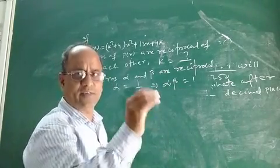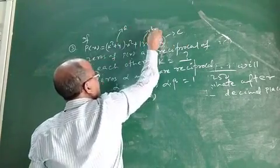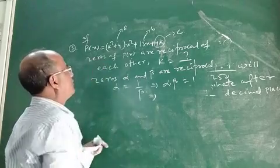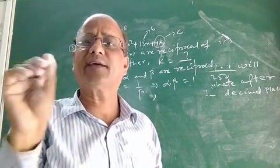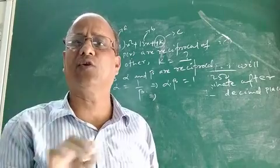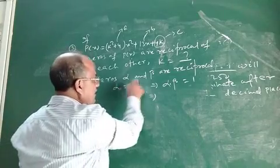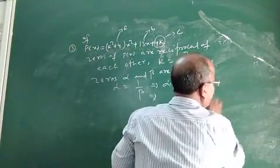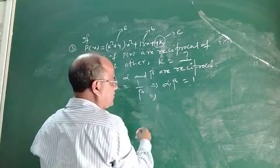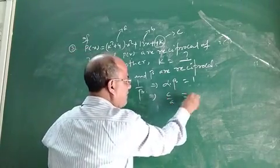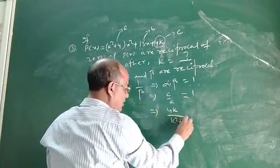The formula for product of zeros of a quadratic polynomial is C by A. Every quadratic polynomial is in the form A x squared plus B x plus C. In this case, A equals K squared plus 4, B equals 13, and C equals 4K. So alpha into beta equals C by A equals 4K divided by K squared plus 4, and this equals 1.